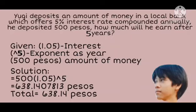The problem is stated above. Given: 1.05 as interest — 0.05 is converted to decimal from 5%, and 1 stands as the year which the bank offered — to the power of 5 is the exponent as year, and 500 pesos was the amount of money Yugi deposited. Solution: 500 times 1.05 to the power of 5. The total is 638.14 pesos.